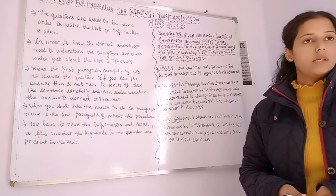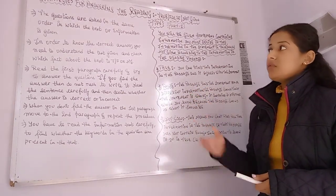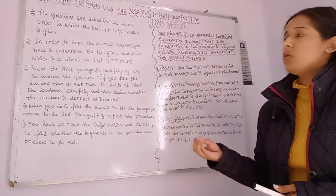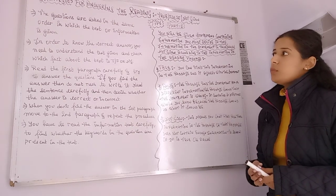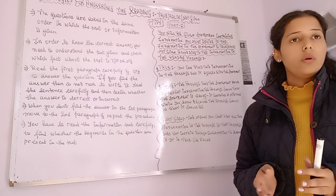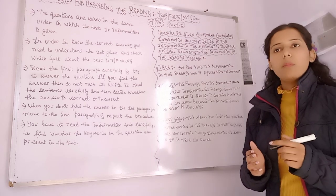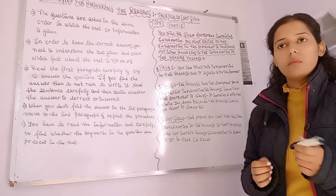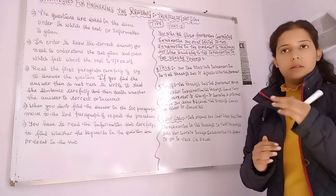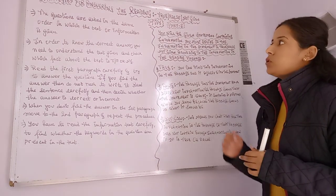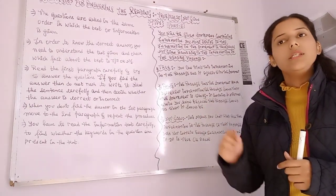Now let's jump into the tips and techniques for how to handle True, False, Not Given questions. The first technique to keep in mind is that the questions are asked in the same order as the text. The questions are always in sequence — the first answer will not be in paragraph A and the second answer in paragraph E. You should always solve the questions in the same order.